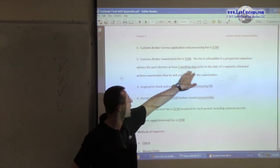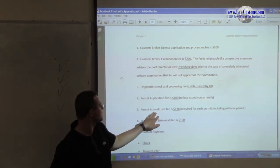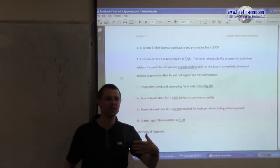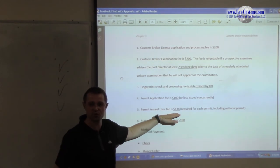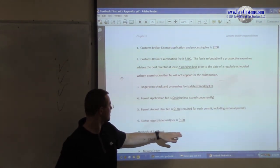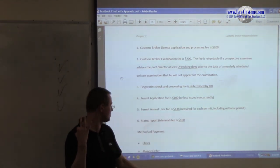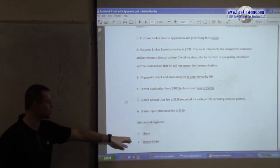And we talked about that. At the same time, it's application for the license. This and this must be the same. And user fee. So I have a permit. Every year, to continue using a permit, I have to pay $138. And status report, every three years we talked about. That's $100. How do I pay? Check or money order.